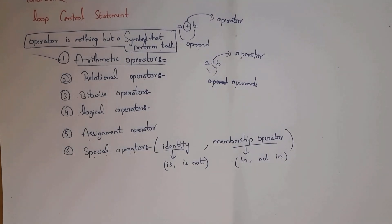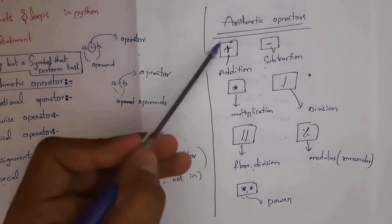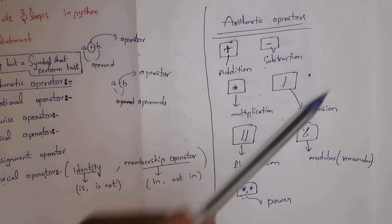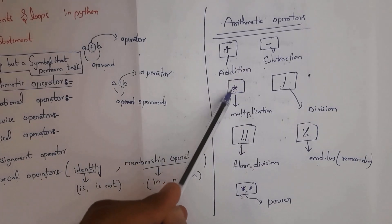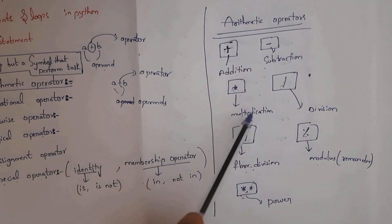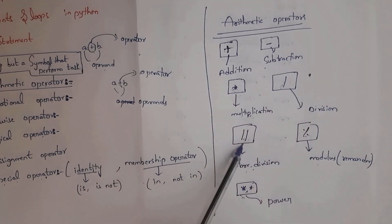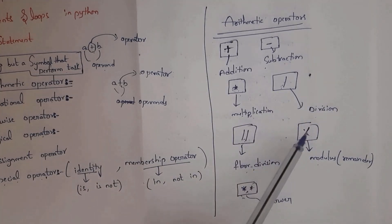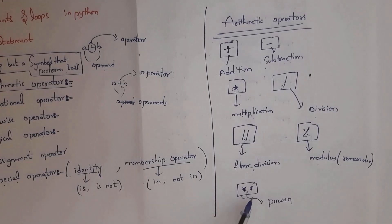Python supports seven arithmetic operators: plus for addition, minus for subtraction, asterisk (*) for multiplication, slash (/) for division, double slash (//) for floor division, percentage (%) to calculate modulus, and double asterisk (**) for power.